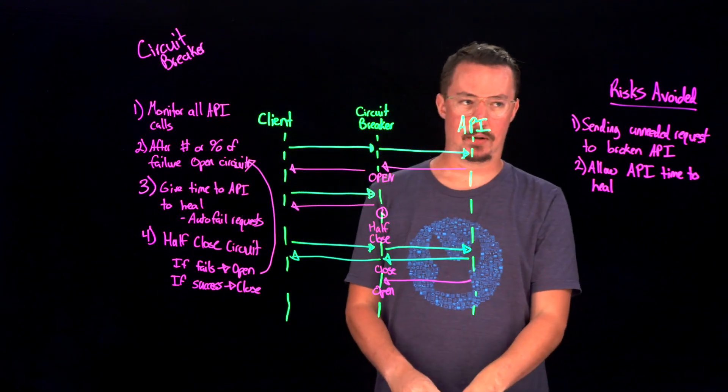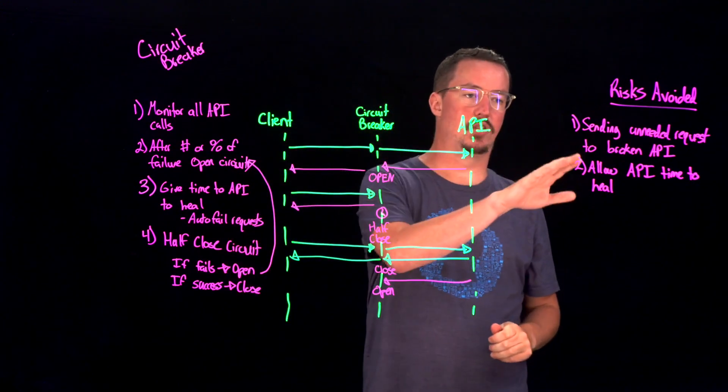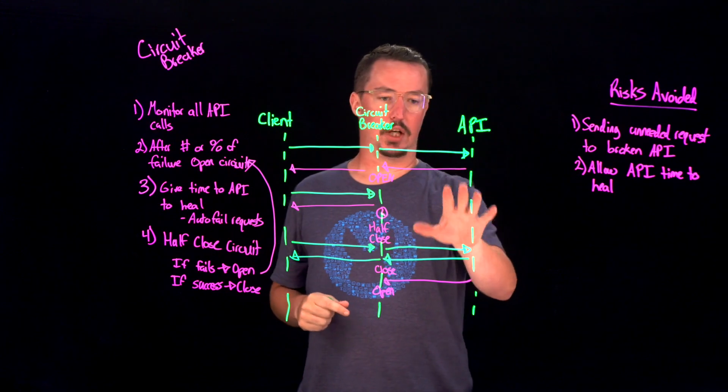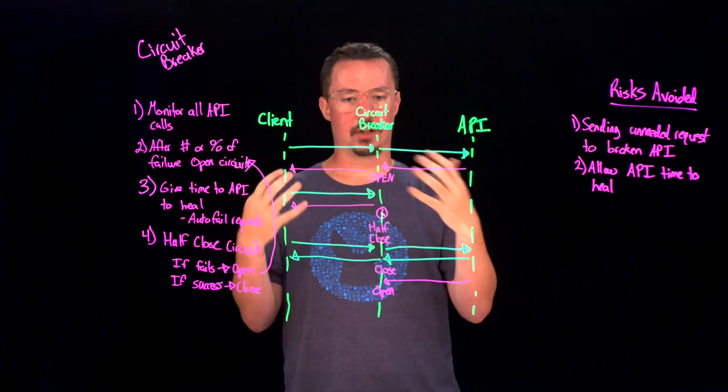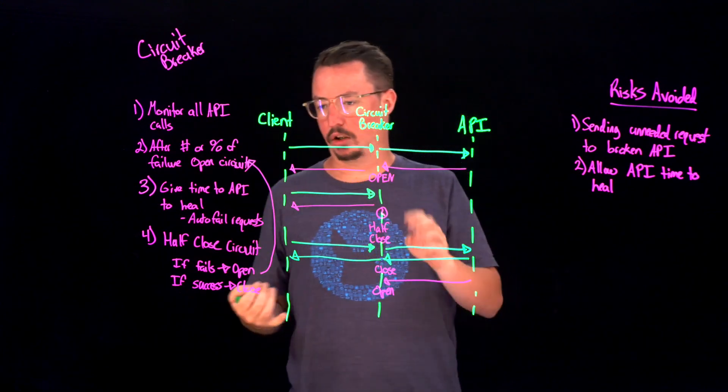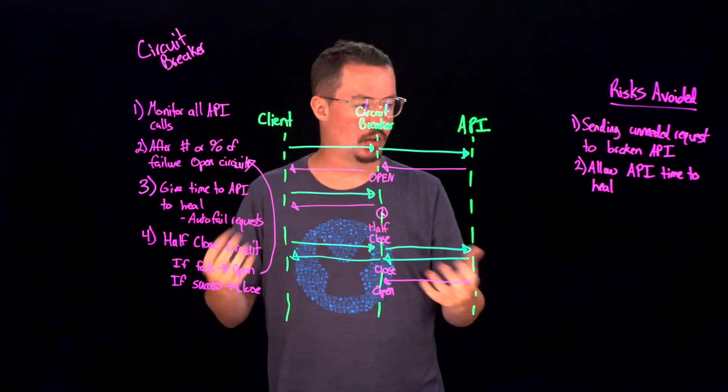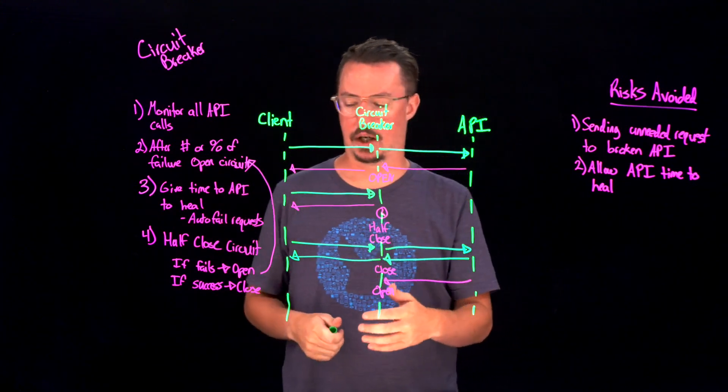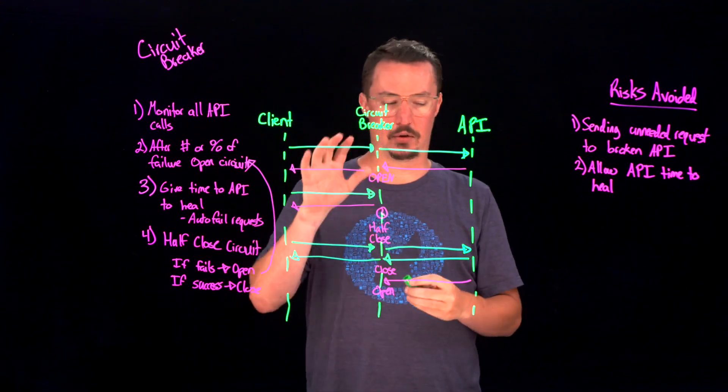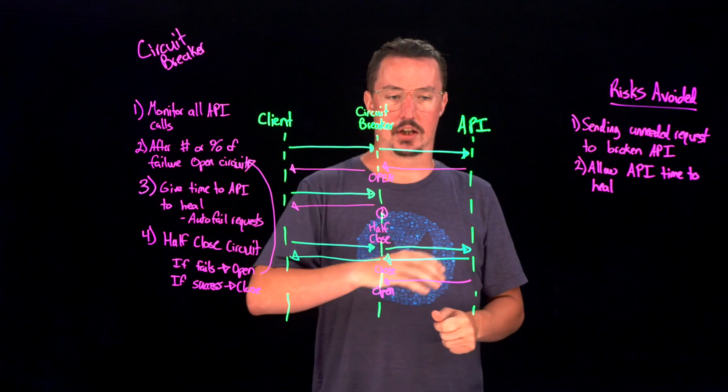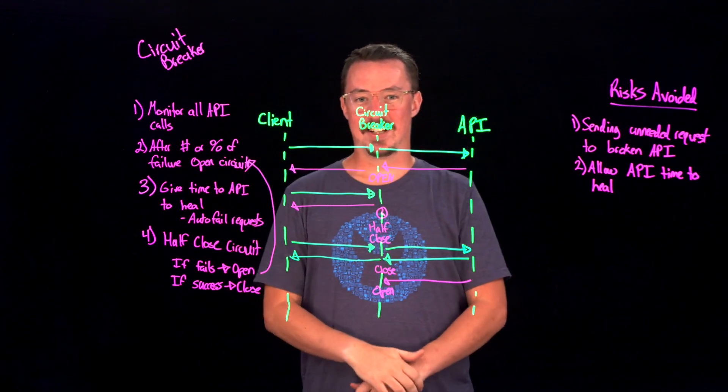So with that being said, this is the basic pattern for our circuit breaker, which is going to really allow us to not send unneeded requests to a particular API that is broken and needs time to heal. Again, this can be utilized in conjunction with all the other different patterns. So if we wanted to use a retry pattern or timeout patterns and things like that to send failures or to retry different APIs, we can certainly reuse those here. But really what this is going to allow us to do is to not send unneeded requests. So with that being said, this is a circuit breaker pattern. Thank you and have a great day.